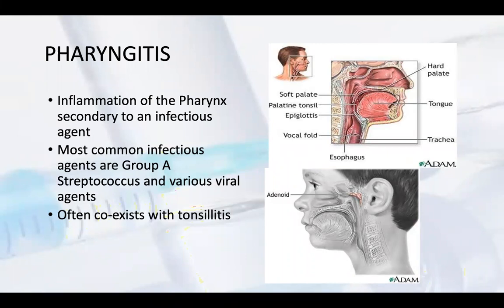Pharyngitis is inflammation of the pharynx secondary to an infection. It is a secondary infection mostly. There is an oral infection that leads to pharyngitis. The most common infection agents are Group A Streptococcus and various viral agents.